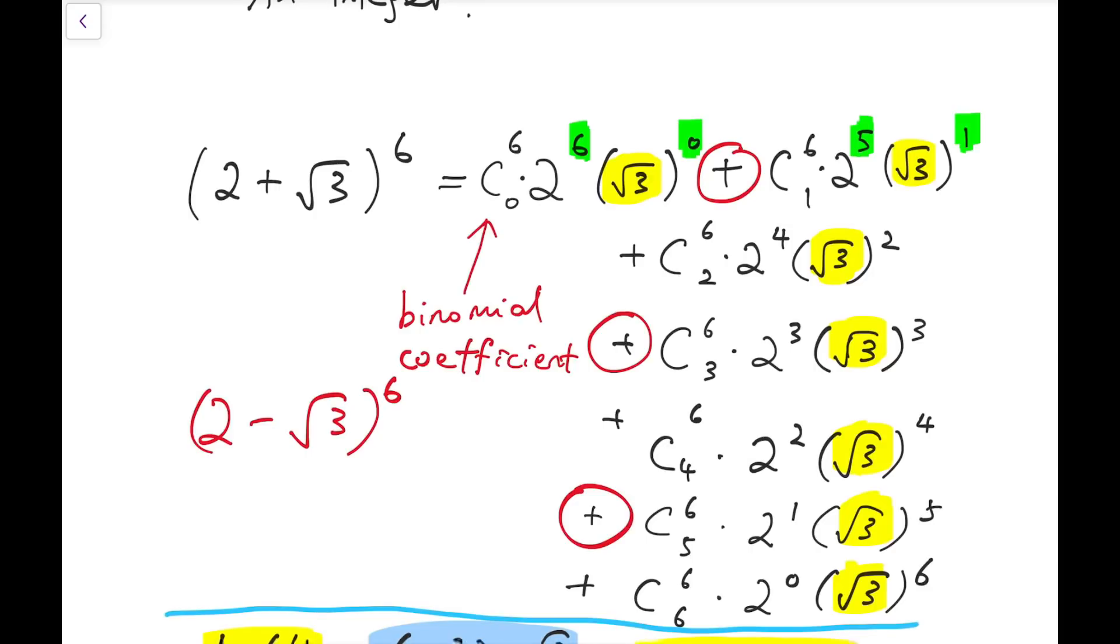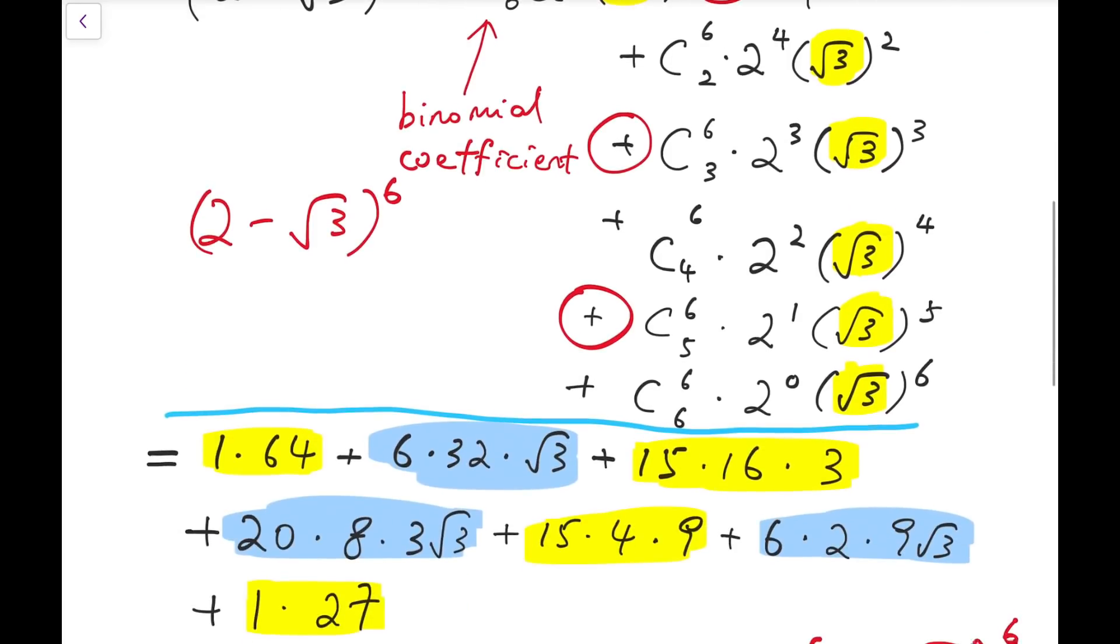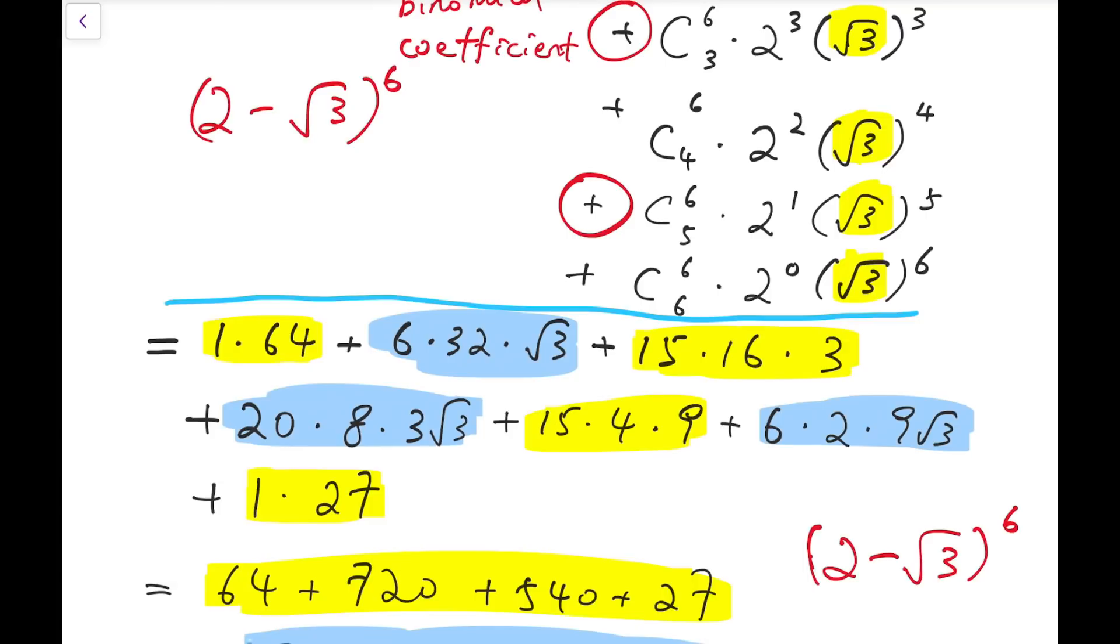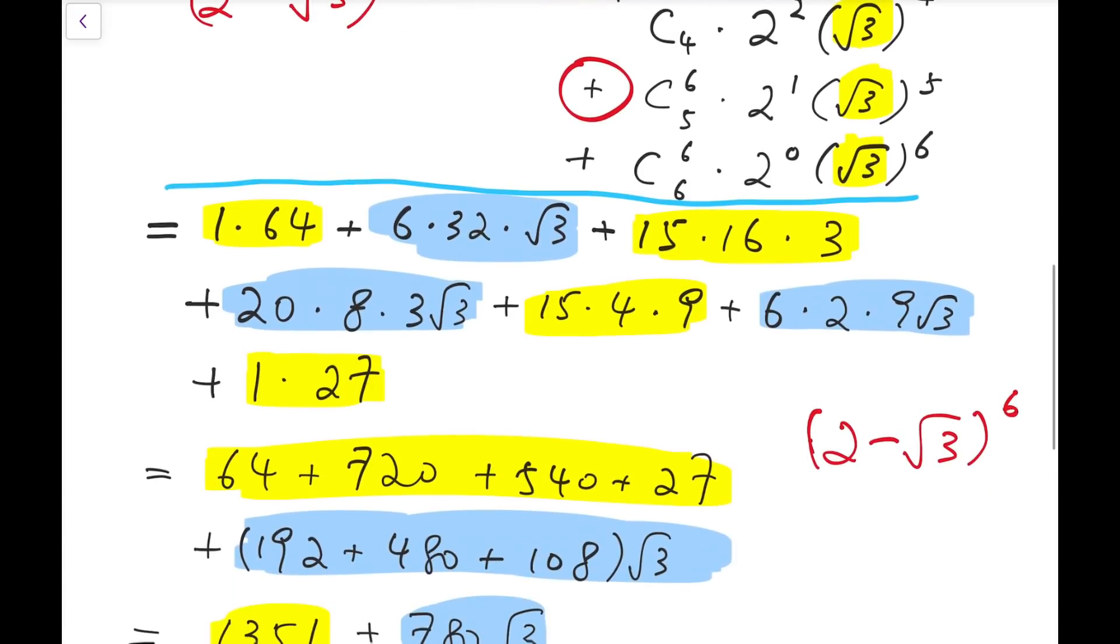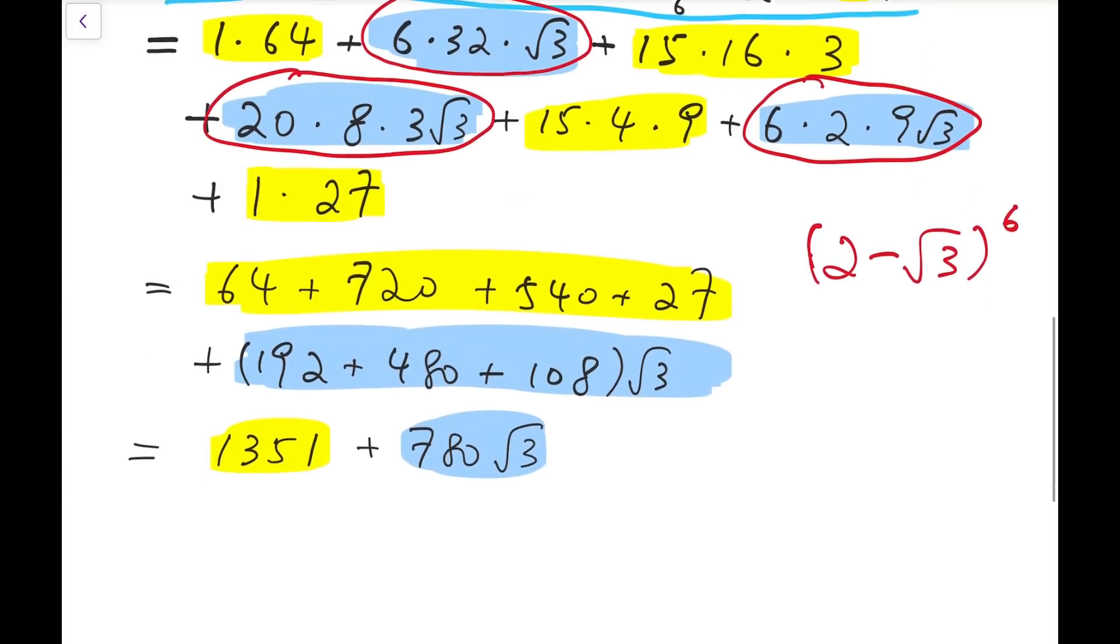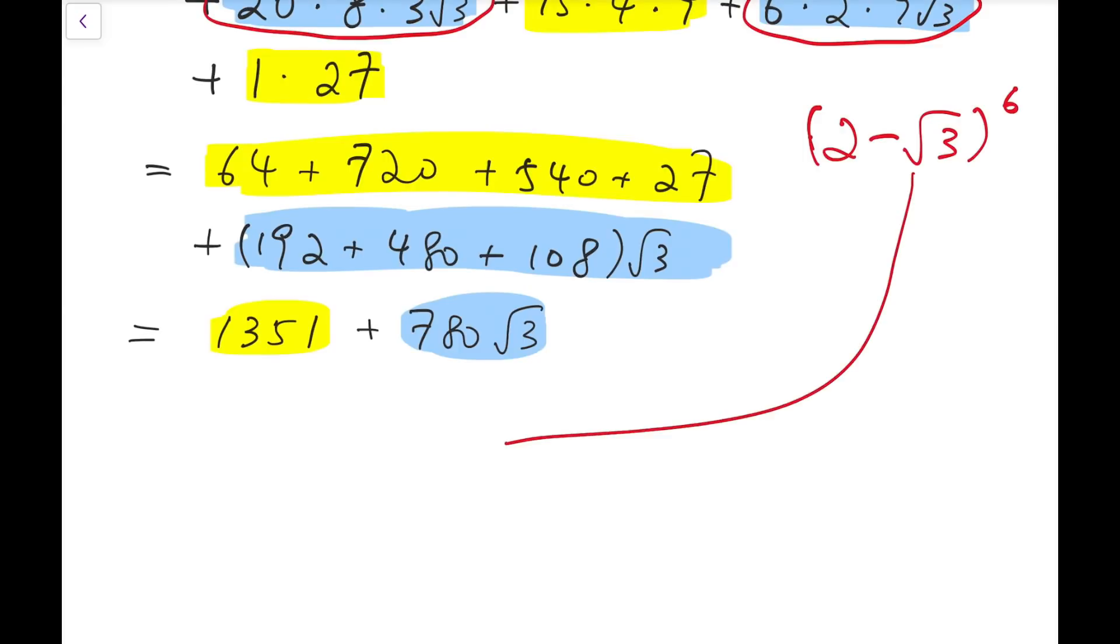So we're keeping half of the terms exactly the same, while for the others, they are not positive now, but they become negative. And the key is, since they are odd powers of square root of 3, the outcome, the output, will still contain one single square root of 3. They cannot be combined into integers. So in fact, the blue group and the consequence steps will be affected. And the way they are affected is that we are not adding the terms in the blue group, but we are subtracting them in the blue group. So, after doing similar steps, we should get 1351 minus, be careful, it's minus, 780 times square root of 3.